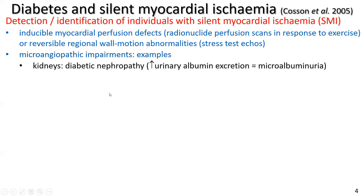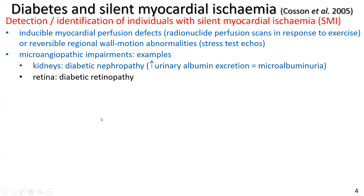Microangiopathic impairments provide additional detection cues. An example is the kidneys — diabetic nephropathy, with increased microalbuminuria, meaning increased urinary albumin excretion in patients with kidney damage. In the retina, diabetic retinopathies are another very non-invasive marker. Both of these tests are non-invasive and can potentially point towards an individual with silent myocardial ischemia.